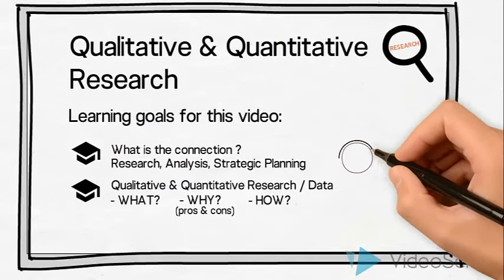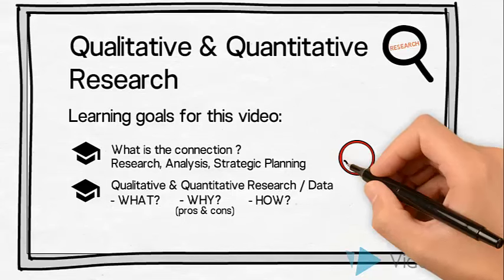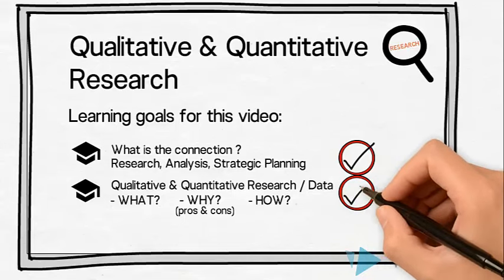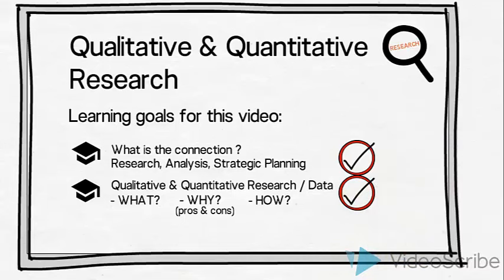We have now established a connection with the rest of the research, analysis and strategic planning process. And subsequently we have used an example to illustrate what qualitative and quantitative research is. We have highlighted the pros and cons of each and provided different examples of how we can conduct these two types of research.